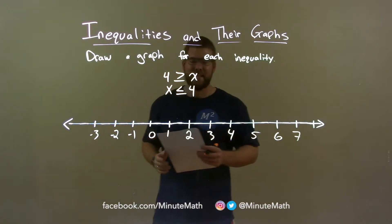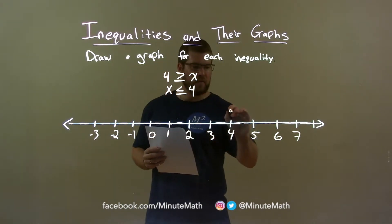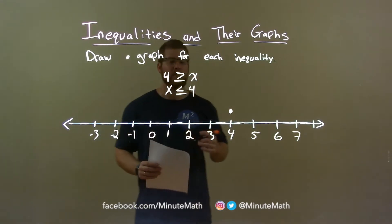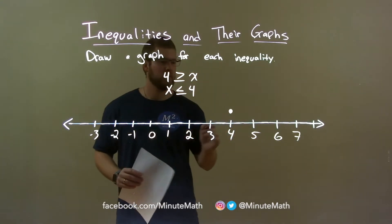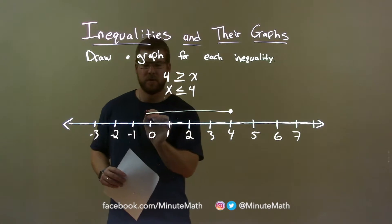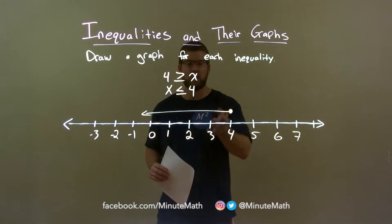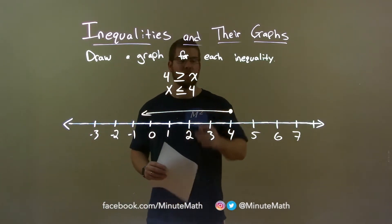Well they tell us that x can equal 4. That means we have a closed circle right there at 4. x is also less than 4 so we're going to shade to the left and there we have our answer. Our graph for 4 is greater than or equal to x.